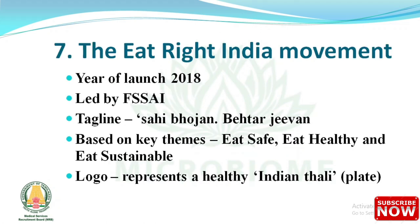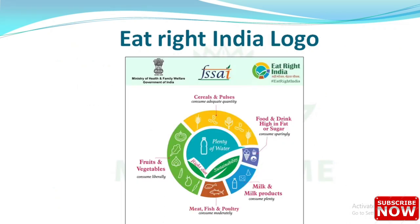About the Eat Right initiative: it was launched in 2018, led by FSSAI, with the tagline 'Sahi Bhojan Behtar Jeevan.' It is based on three key themes: eat safe, eat healthy, and eat sustainable. Its logo represents a healthy Indian thali — cereals and pulses (consume adequate quantity), foods high in fat or sugar (consume sparingly), milk and milk products (consume plenty), meat, fish and poultry (consume moderately), and fruits and vegetables (consume liberally).